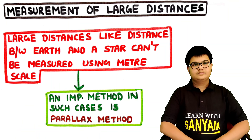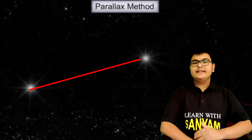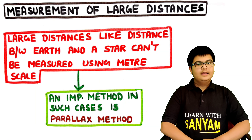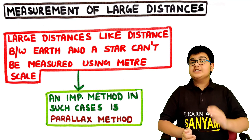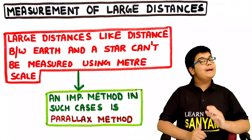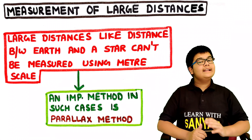In measurement of length, we will take up two cases: measurement of very large distances and measurement of very small distances. Large distances, like the distance between the earth and a star, cannot be measured using a meter scale. An important method in such cases is the parallax method.